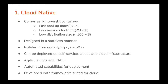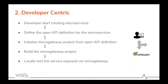Micro gateway is developed with frameworks suited for cloud environments, based on Ballerina — a language specially designed as a cloud native programming language. Micro gateway is developer centric: developers create microservices and define their interfaces using OpenAPI definitions, then use those definitions to create micro gateway projects. They collaboratively develop and finalize the project, which can later be checked out by the operations team and deployed in the environment.